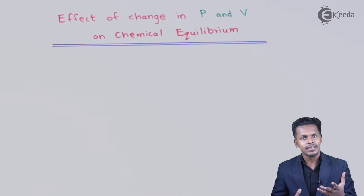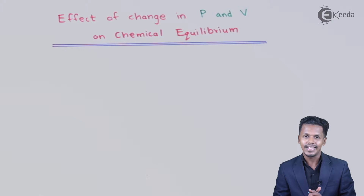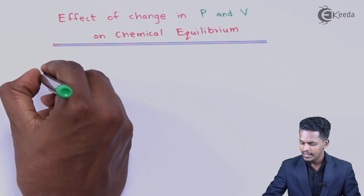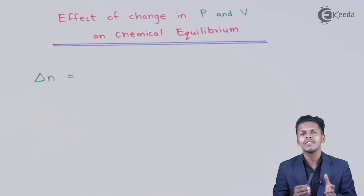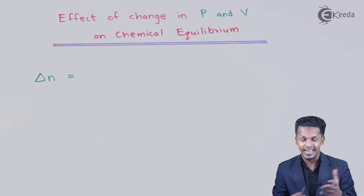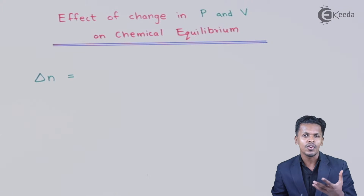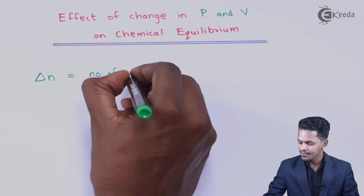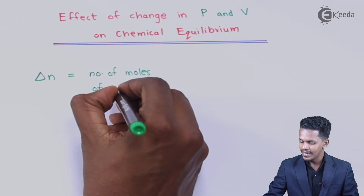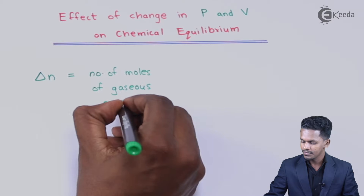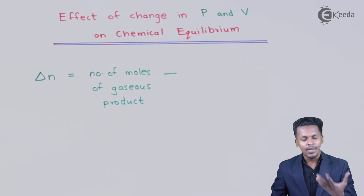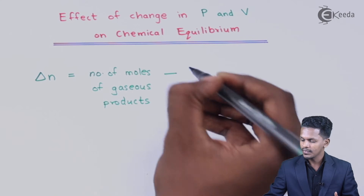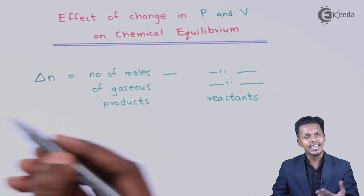So if we are talking about a gaseous reaction, the main thing we observe is the change in the number of moles of the reactants as well as the products. We are concerned with delta n. Delta n is the difference between the number of moles of the gaseous product obtained and the number of moles of the gaseous reactants.